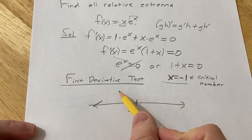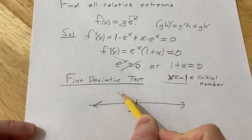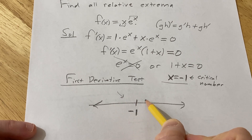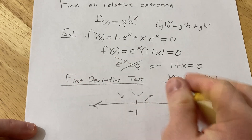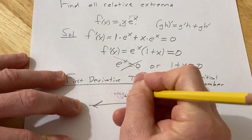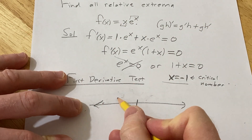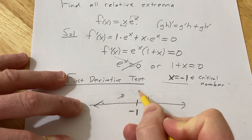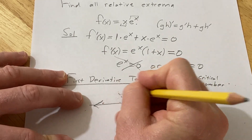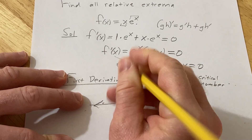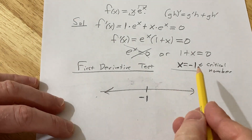For example, if the derivative is negative to the left that means the function is decreasing; if it's positive to the right that means the function is increasing — in that case we would have a minimum. It could be the reverse — increasing then decreasing — in which case we have a maximum. But it could also be the case that we have neither. So let's go ahead and plug in some numbers to see what's going on.